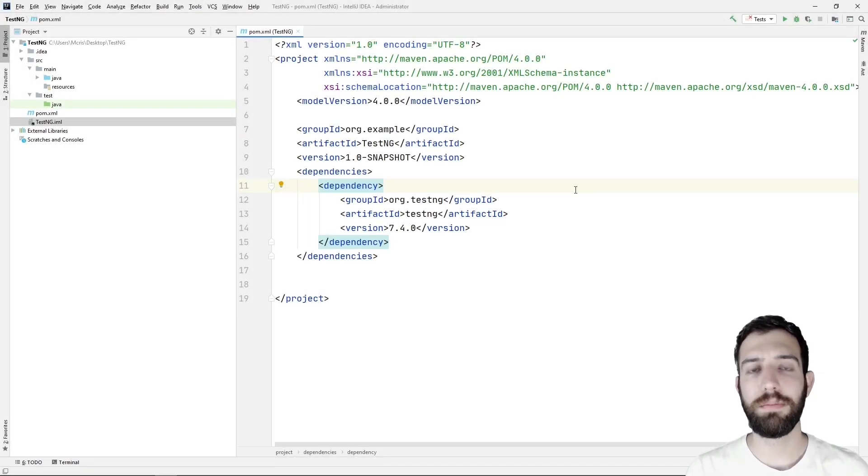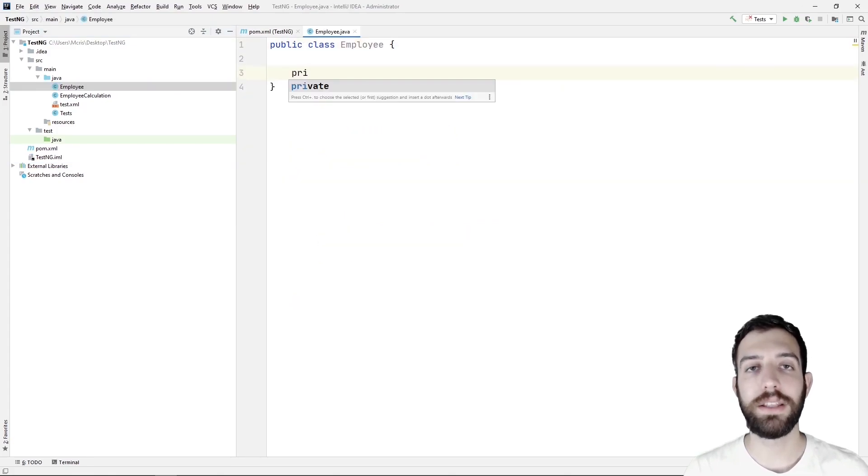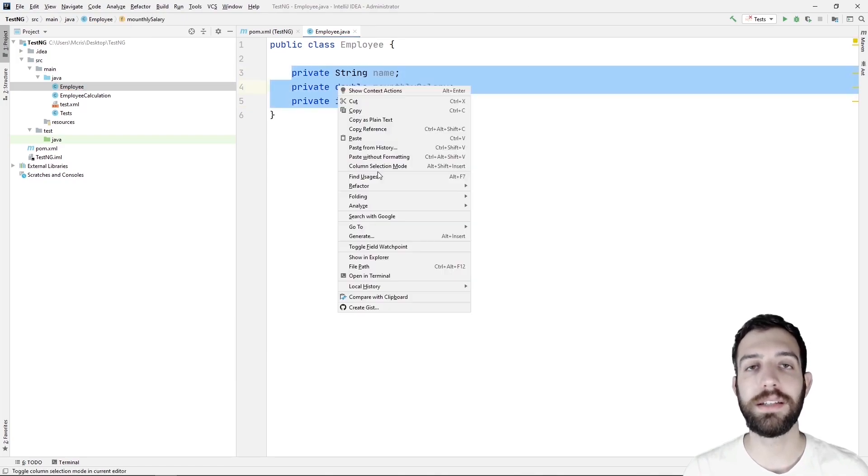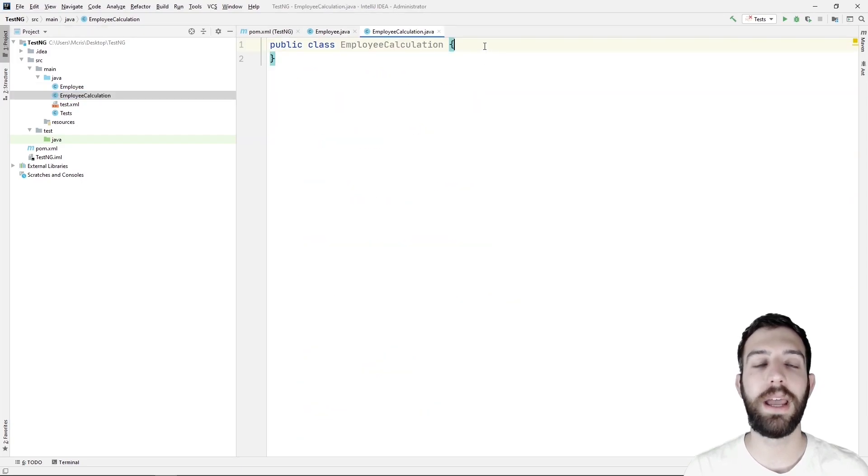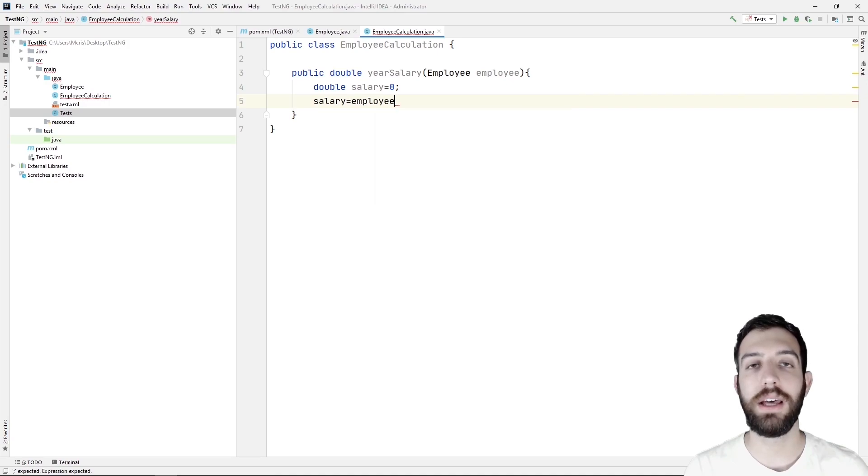The first thing that we need to do is to open the pom.xml file and add the dependency of TestNG. The next step is to create a new class with a name Employee and write some attributes such as the name, the monthly salary, and the age of the employee and write the getters and the setters for each attribute. Furthermore, we need to create a new class with a name EmployeeCalculator in order to write two methods to be able to test them later. At first, the first method is the yearly salary, which has one parameter, which is the employee. Inside the method, we create a new double salary variable. We calculate the salary of the year of the employee. And last, we return the salary.